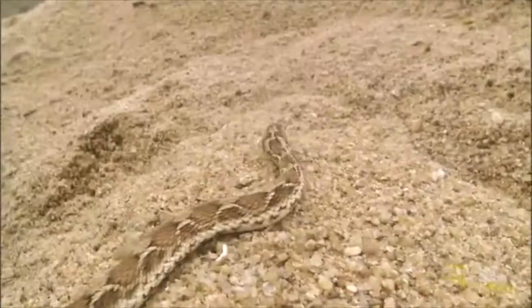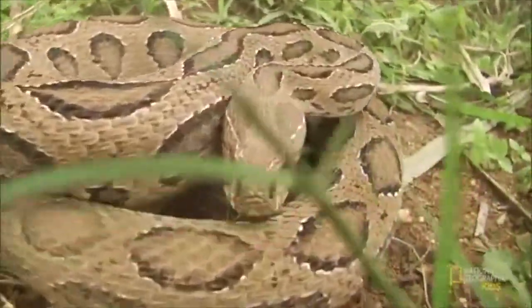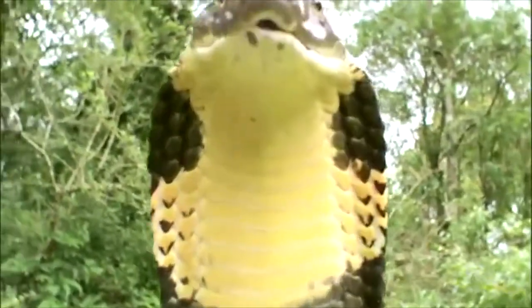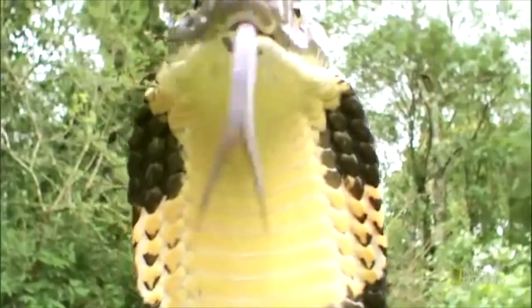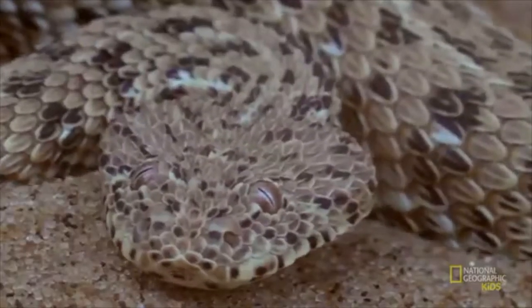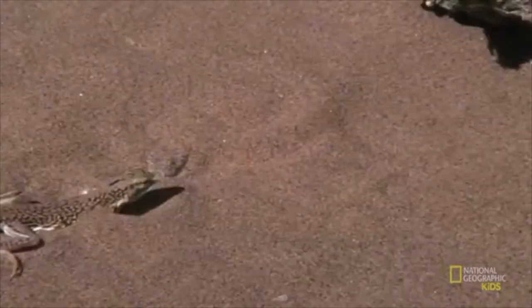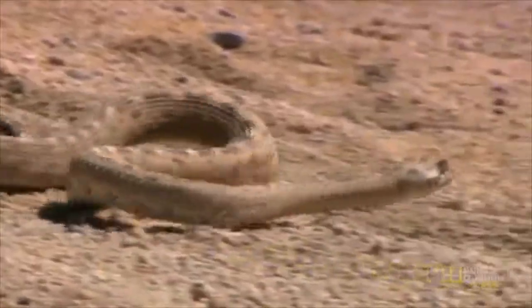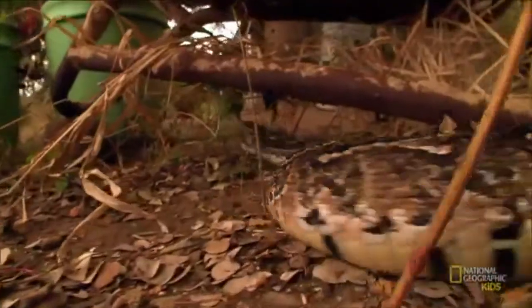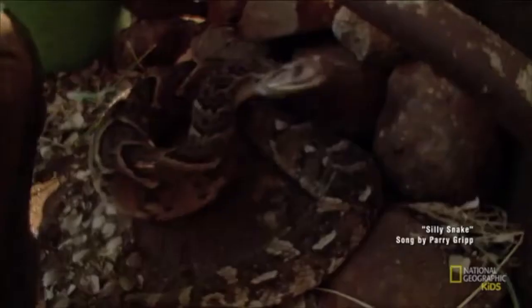He's a silly snake, he's such a silly snake. He's got a forked tongue that helps him to smell, he's an extra sense. His eyes are always open, but he can't see very well. He can't tell when he's sleeping, can't tell when he's awake. He's a silly snake, he's such a silly, such a silly snake.